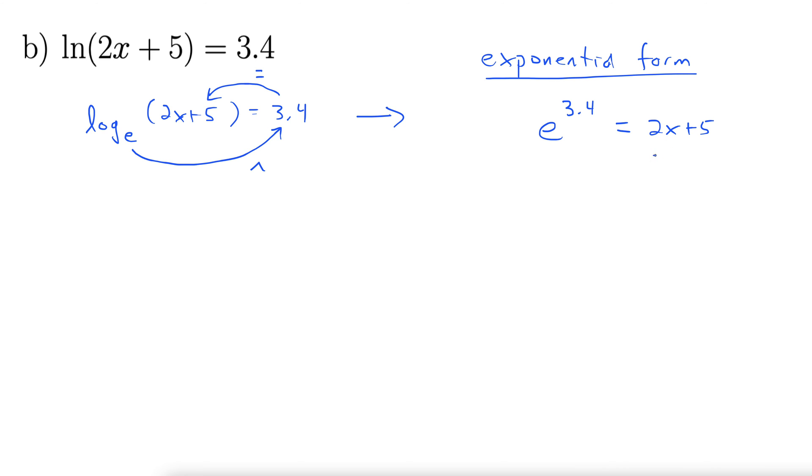So let's solve this for x. I'm going to subtract 5 from both sides. This gives us e to the 3.4 minus 5 equals 2x. And then we divide both sides by 2. That gives us x equals e to the 3.4 minus 5 all over 2.